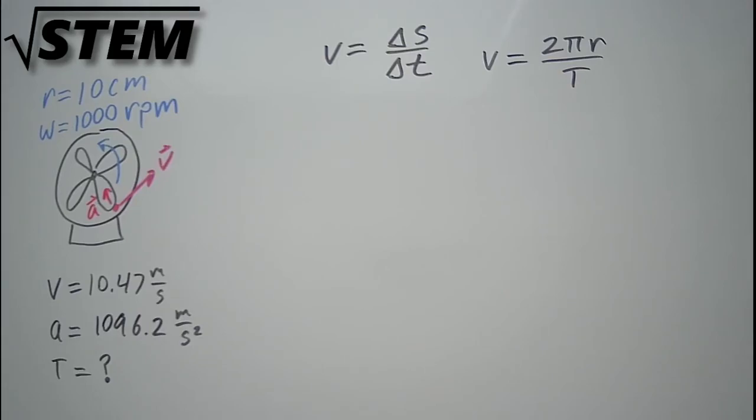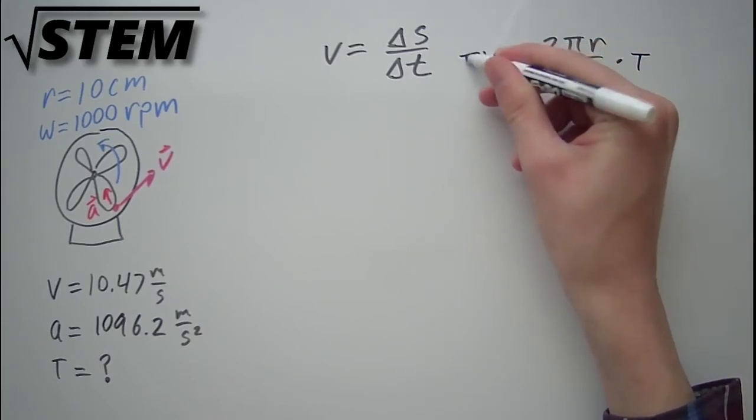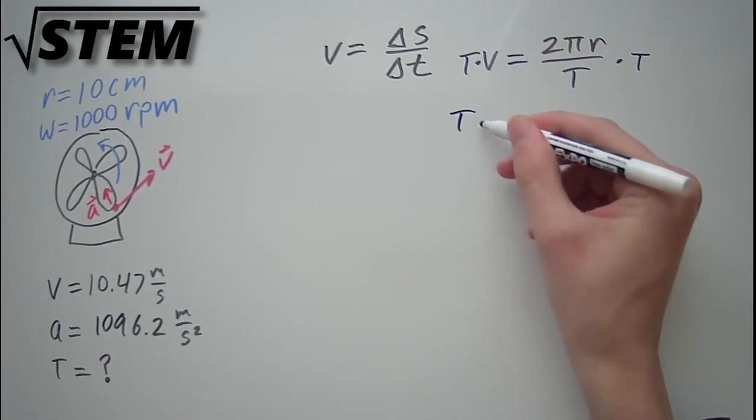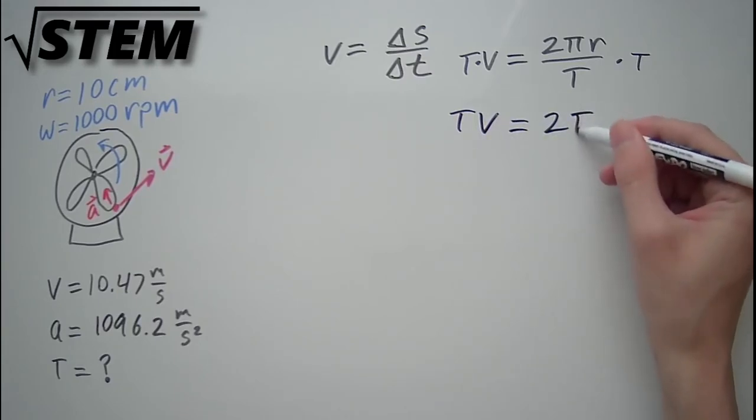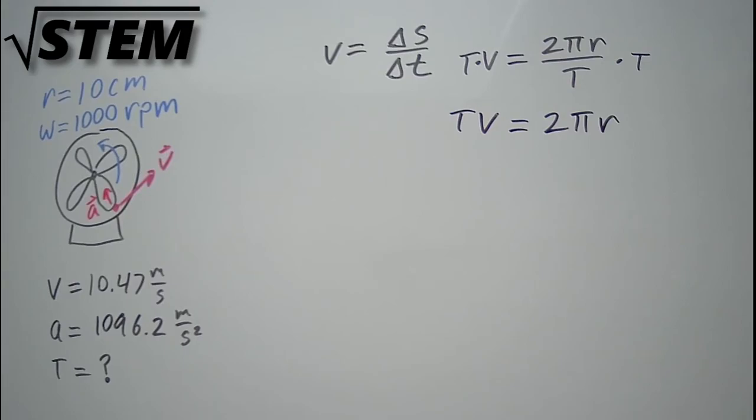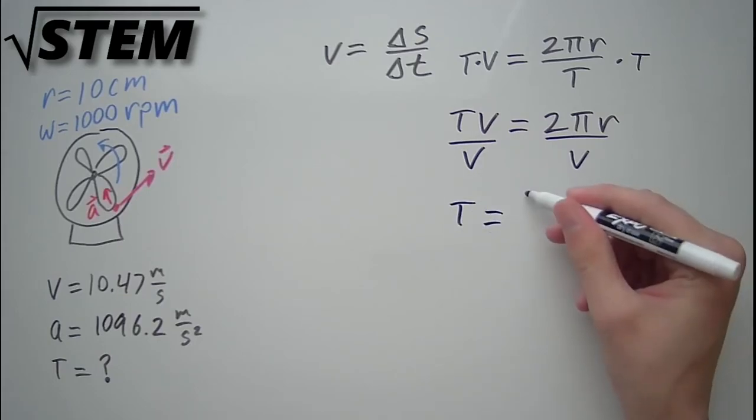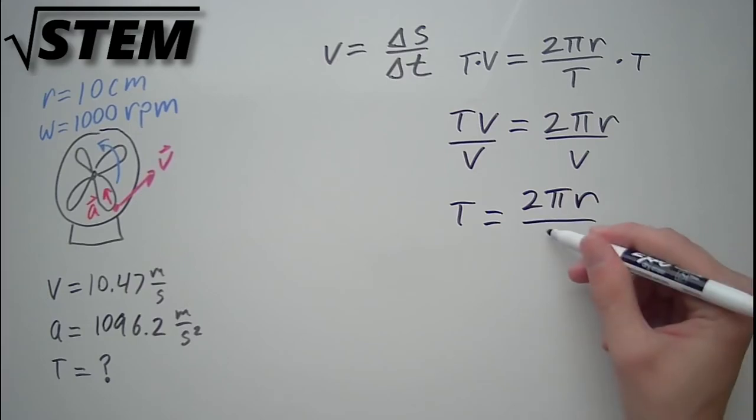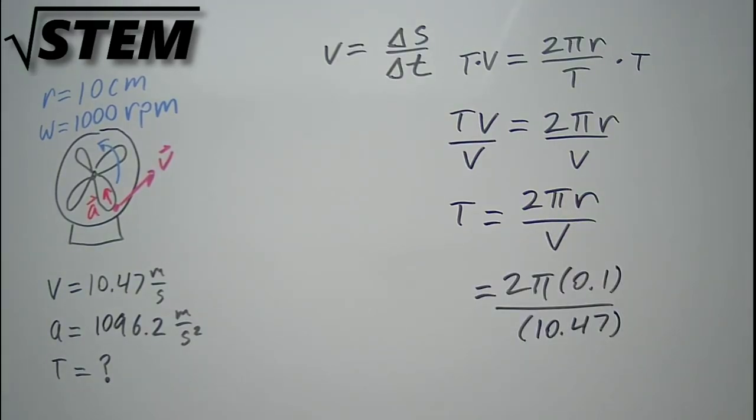Now to solve for t, we can multiply both sides by t to get that tv but not television is equal to 2pi r. Next we'll divide by v to find that the period t equals 2pi r over v. And when we plug in our values of 0.1 meters for the radius and 10.47 meters per second of velocity, we'll find that the period is equal to 0.06 seconds.